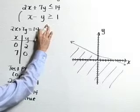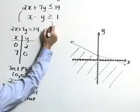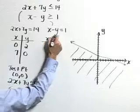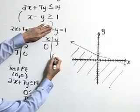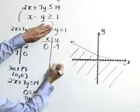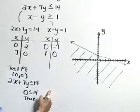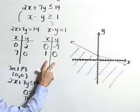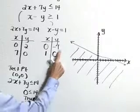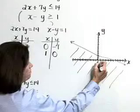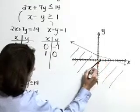Next, let's graph our second inequality: x minus y is greater than or equal to 1. We'll graph its boundary line x minus y is equal to 1 using a t-table and finding intercepts. If we let x equal 0, then y is equal to negative 1. If we let y equal 0, then x is equal to positive 1. Again, we graph this boundary line as a solid line because the inequality includes the equal to part. This line passes through (0, -1) and (1, 0) on the x-axis.